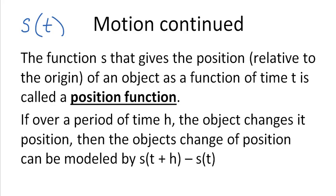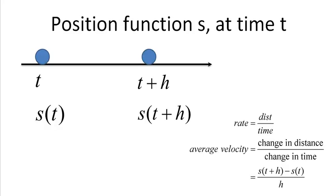As objects are put into motion, over a period of time h, the object changes its position. The object's change of position can be modeled by s of t plus h — the position at that later time — minus s of t, the position at the earlier time. Here we have an object at current time t, and after some time the object moves and changes its position.